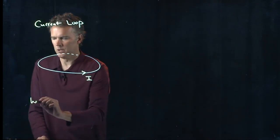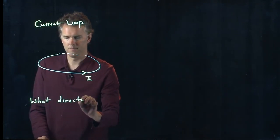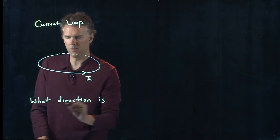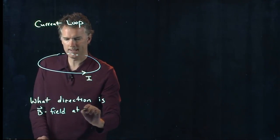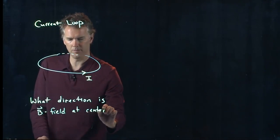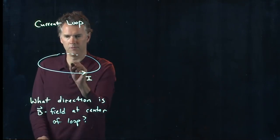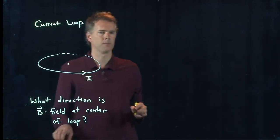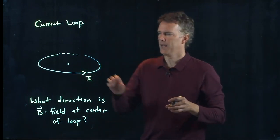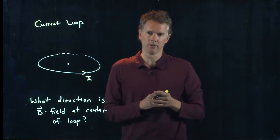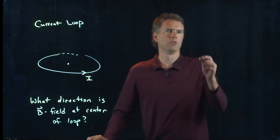What direction is the B field at the center of this loop? So at this point right here, we've got a horizontal loop of wire carrying current I and now I want to determine the direction of the B field right there at the center and let's give you some different choices.